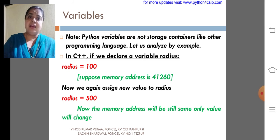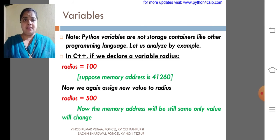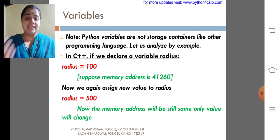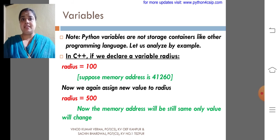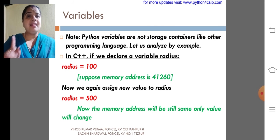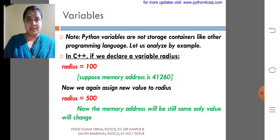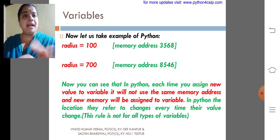That is, radius is stored in a particular memory address. Within that only, we are saving 100, 200, 500 like that. But my dear children, it is not like in Python. This is about C++.